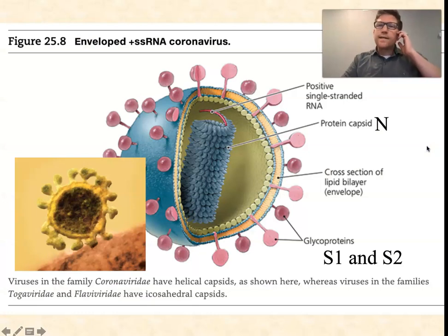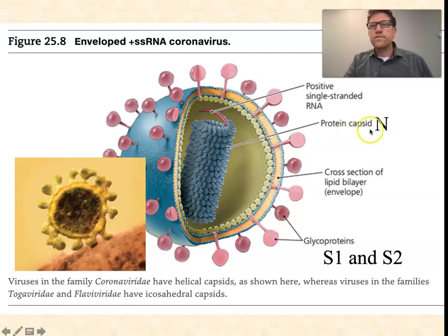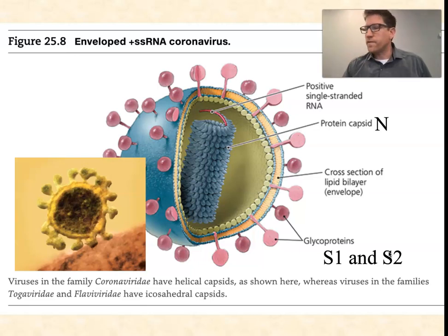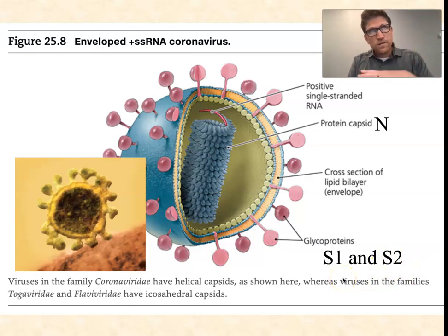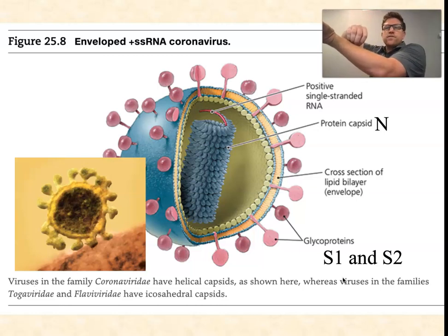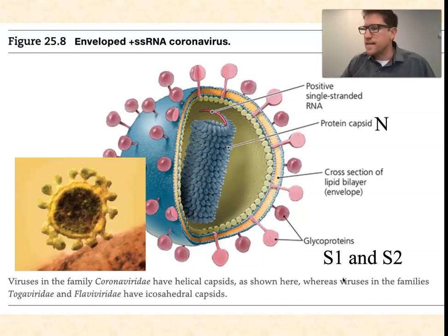I had this slide in the last video, and the things I want to highlight here are some of the key proteins. The capsid protein is referred to as the N protein — nucleocapsid N. The glycoproteins are broken into two subunits, S1 and S2. S1 binds to the receptor called ACE2 on the surface of human epithelial cells. S2 binds to another receptor, TMPRSS2, which is involved in membrane fusion. As the virus sits on the surface of one of our cells, the membranes need to fuse so that the nucleocapsid can enter the cell — S2 facilitates that specifically.